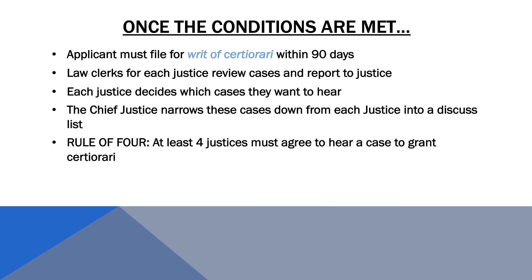Once all of these conditions are met, those appealing their cases must file for a writ of certiorari, which is an order to the lower court to deliver the records of the case to the Supreme Court for review. Law clerks review the case, write memos and summaries, and present them to the justices for final review. The justices decide which cases they would like to hear based upon those summaries. The Chief Justice then compiles a list known as the Discuss List on the most popular cases, and any cases that do not make it onto the Discuss List are denied certiorari. Finally, at least four Supreme Court justices must agree to hear the case for it to be placed on the docket — this is known as the Rule of Four.